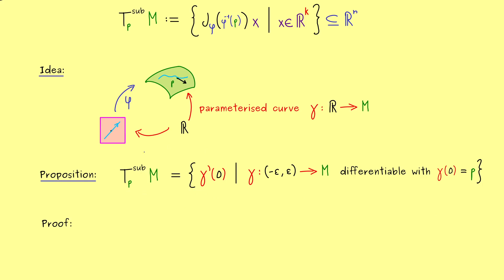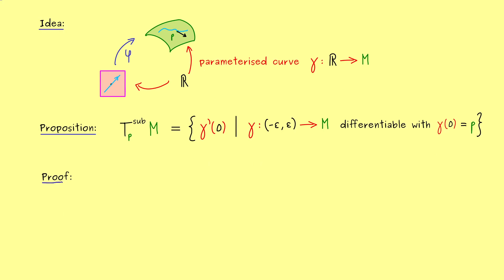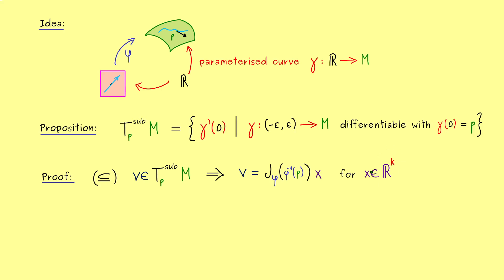The tangent space can be described as the collection of all these vectors in Rn. I want to show you the proof: we have to show a set equality, which means we have to show two inclusions. First, let's show that the original tangent space is a subset of the right-hand side. If we take a vector v from the tangent space, the original definition says v can be written as the Jacobian matrix times a vector x, where x is from Rk. Let's introduce p-tilde for the corresponding point on the lower level.